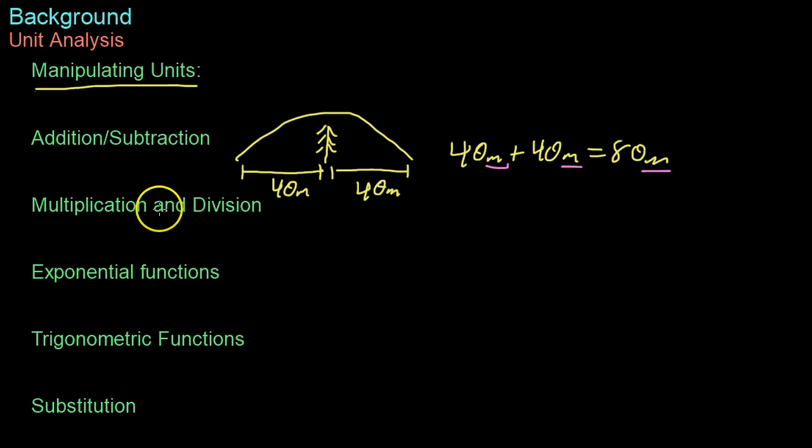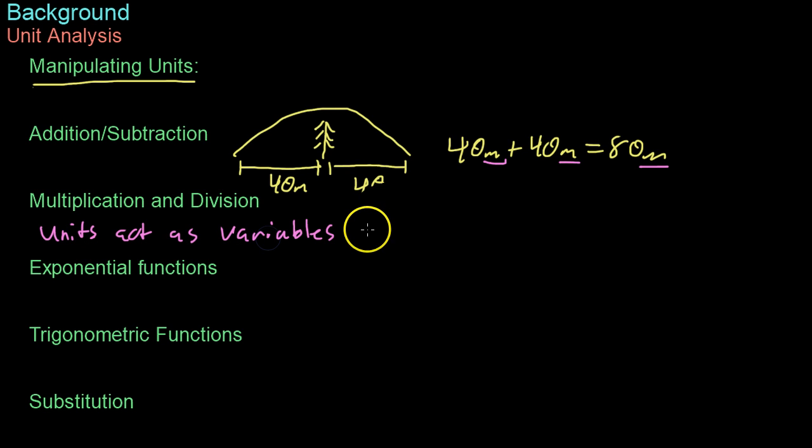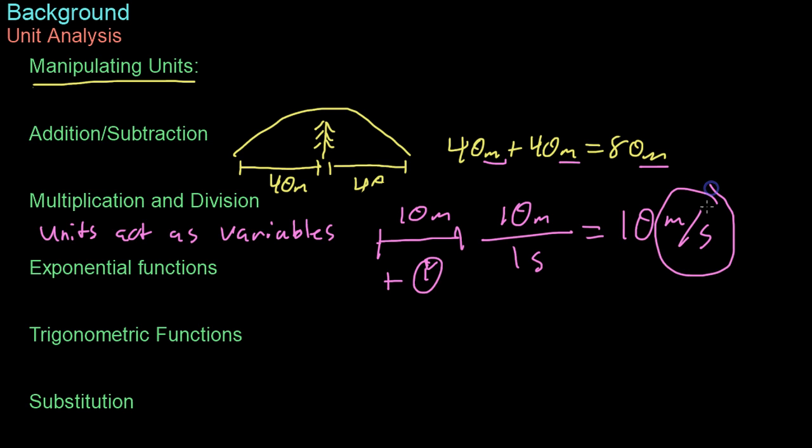For multiplication and division, basically, you have to understand that units act as variables. For example, if you wanted to measure a speed by how long something travels, in this case 10 meters in some time, let's say one second on a poorly drawn stopwatch, you find the ratio of how long, 10 meters, every one second, and you get that it traveled 10 meters per second. In other words, units don't just disappear through multiplication and division. They remain a sort of ratio of variables. If you had 10A over 1B, you would get 10A over B. Likewise, you have 10 meters over 1 second, you get 10 meters per second.